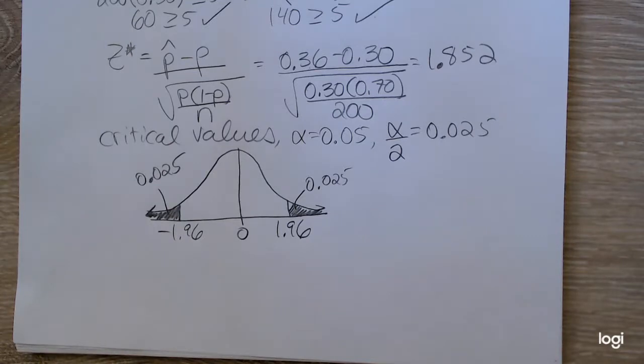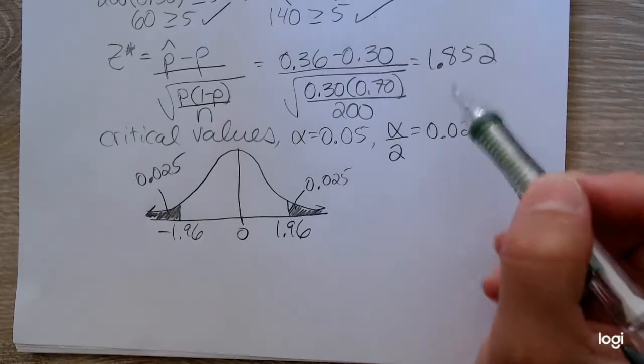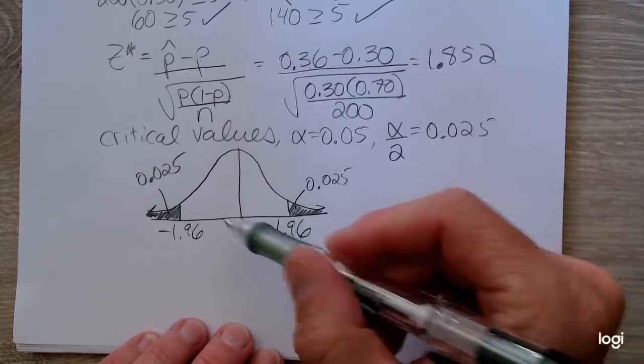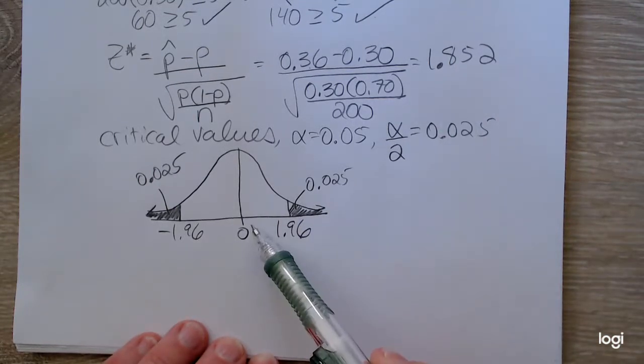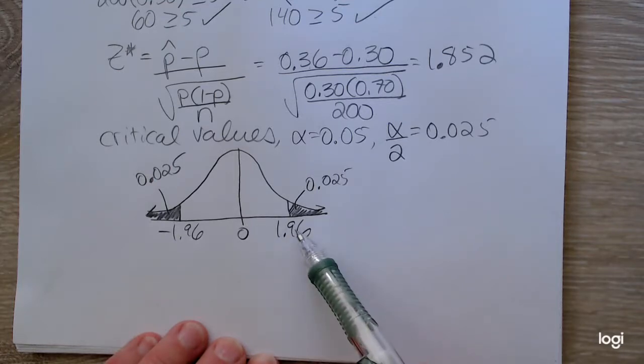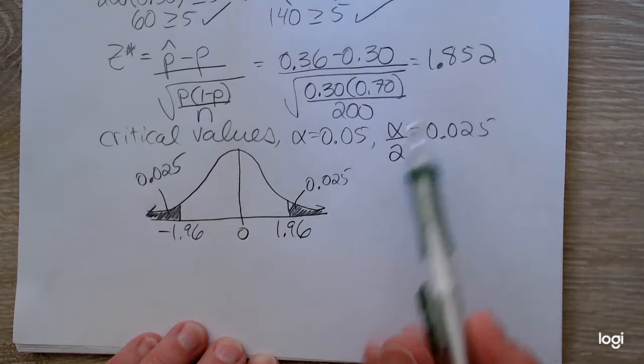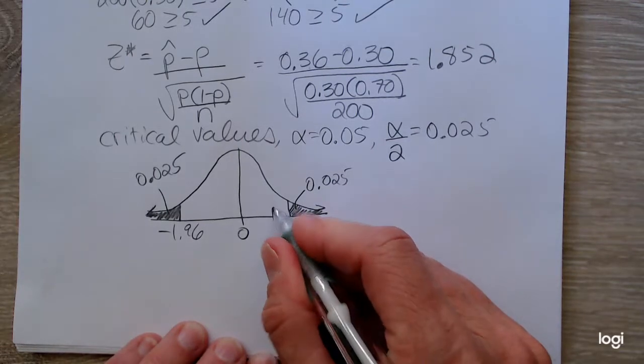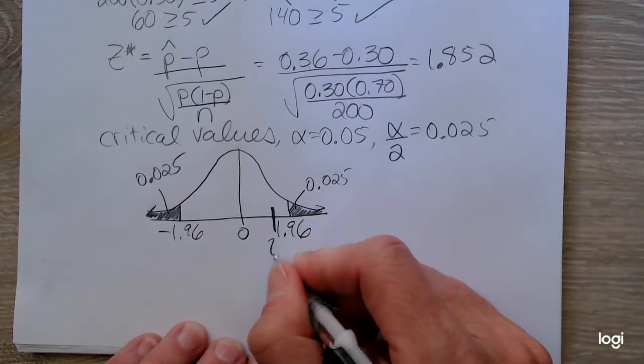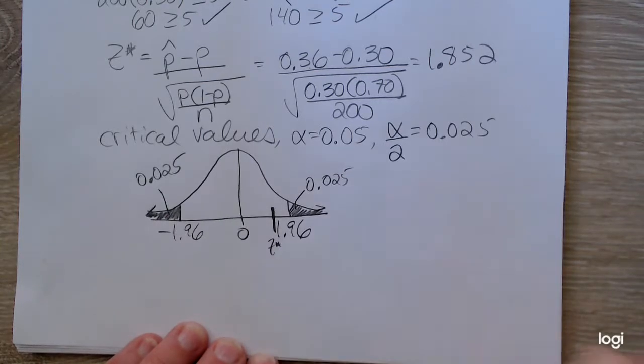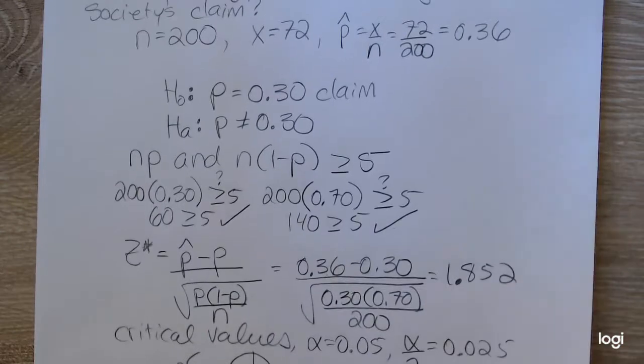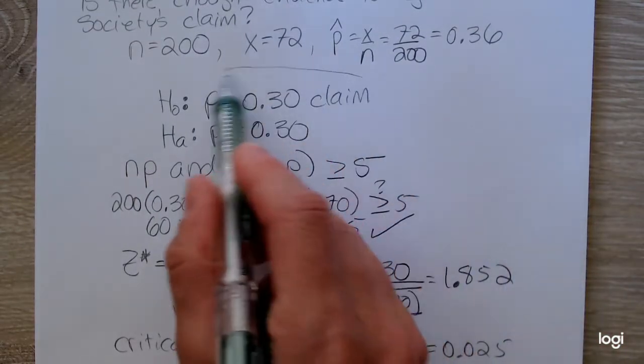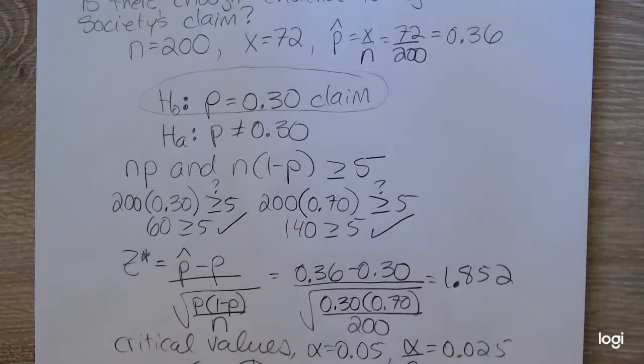All right, so I need to decide where does my standardized test statistic lie with respect to these critical values. Since it's positive, is it further to the right of 1.96? No, it is in the fail-to-reject region. It's about here. Okay, so I know my decision is to fail to reject the null hypothesis. I'm failing to reject the null, and the null is the claim.